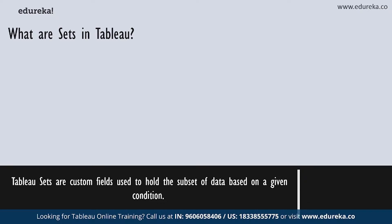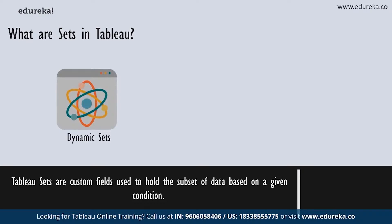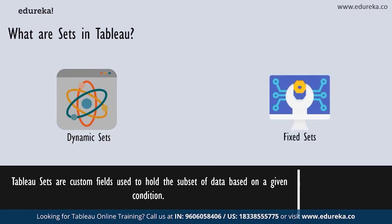There are two kinds of sets you can create in Tableau. Number one is a dynamic set. The members of a dynamic set change when the underlying data changes — it updates automatically. Dynamic sets can only be based off of a single dimension. Apart from that, you also have fixed sets. The members of a fixed set do not change. A fixed set can be based on a single dimension or multiple dimensions, and since it does not update on its own, you can have multiple dependencies.